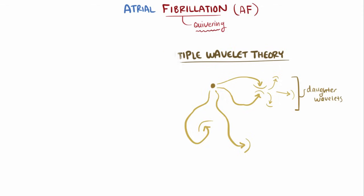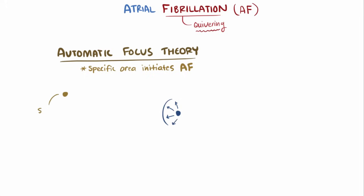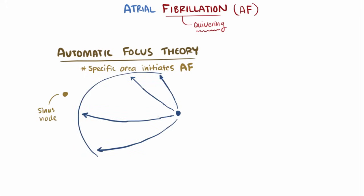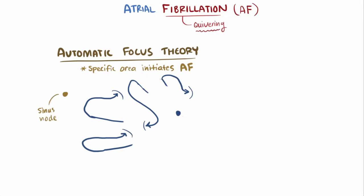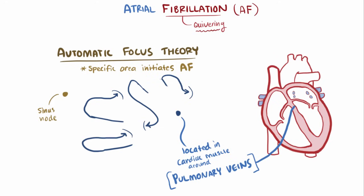Along with this multiple wavelet theory, there's also an automatic focus theory, where there's a specific origin thought to initiate AF by rapid firing of electrical impulses that overtake the sinus node. Combined with the risk factors and tissue heterogeneity, this can promote AF. It's thought that the focus of cells are conducting cells in the cardiac muscle around pulmonary veins — and yes, pulmonary veins. Remember that these veins physically enter the left atrium, and where the pulmonary veins enter, there's tissue that has really unique electrical properties.